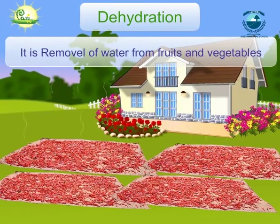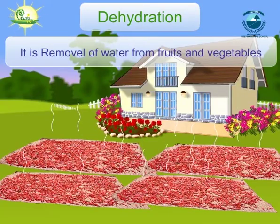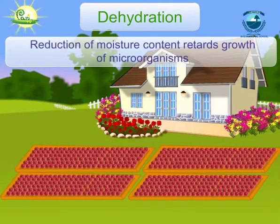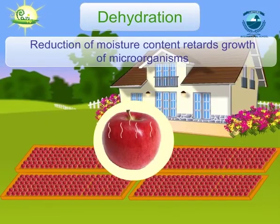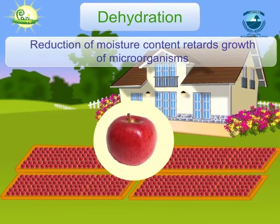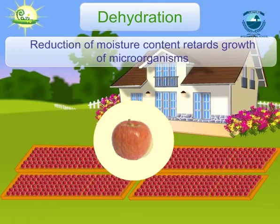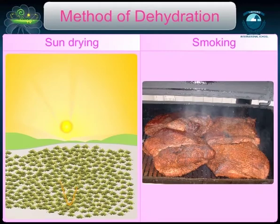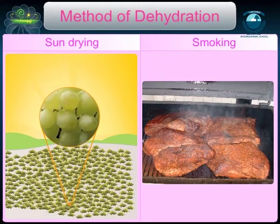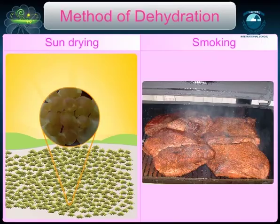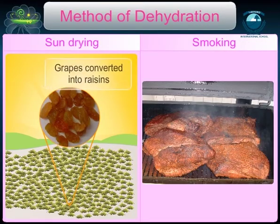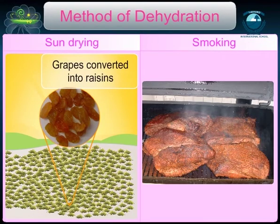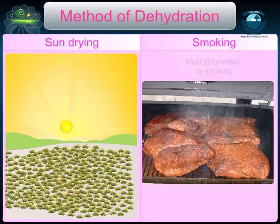Dehydration is the removal of water from fruits and vegetables. It reduces moisture content of food and retards the growth of food-spoiling microorganisms. Dehydration can be done by sun drying or by smoking. Vegetables are dehydrated by sun drying, while fish and meat are dehydrated by smoking.